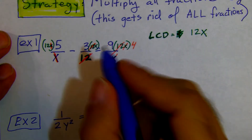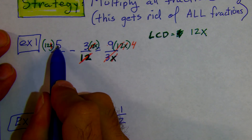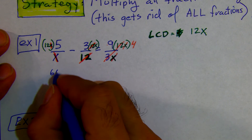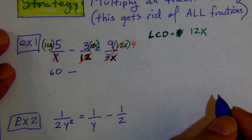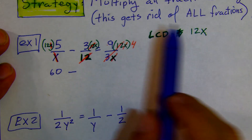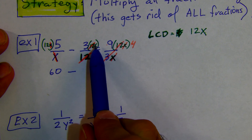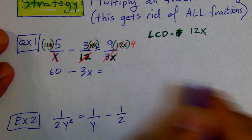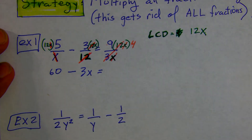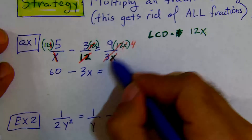The first fraction: 12 times 5 is 60. Minus — left over in the numerator for the second fraction is 3 times x, which is 3x. Equal — we don't have anything in the denominator. That's always the goal. The 12x is gone. We had 9 times 4, which is 36.